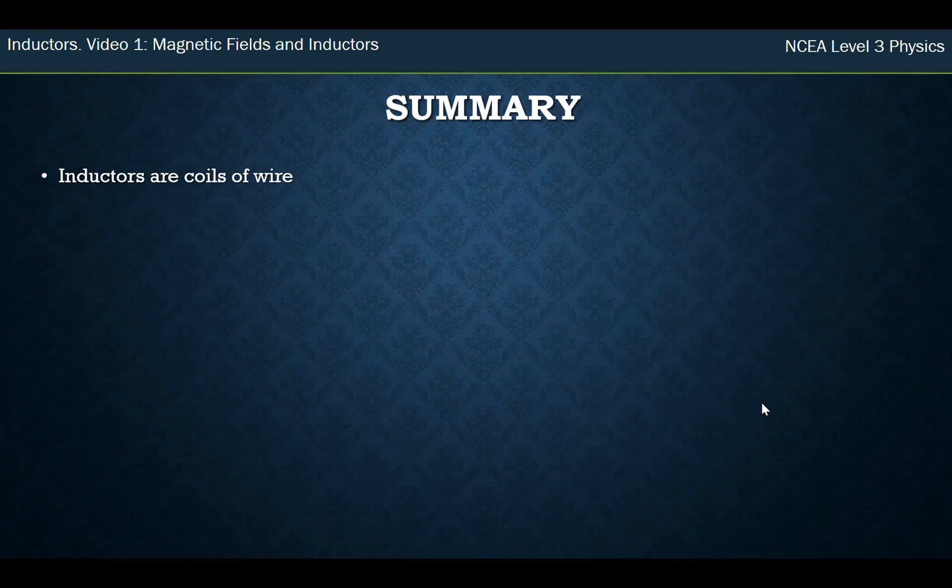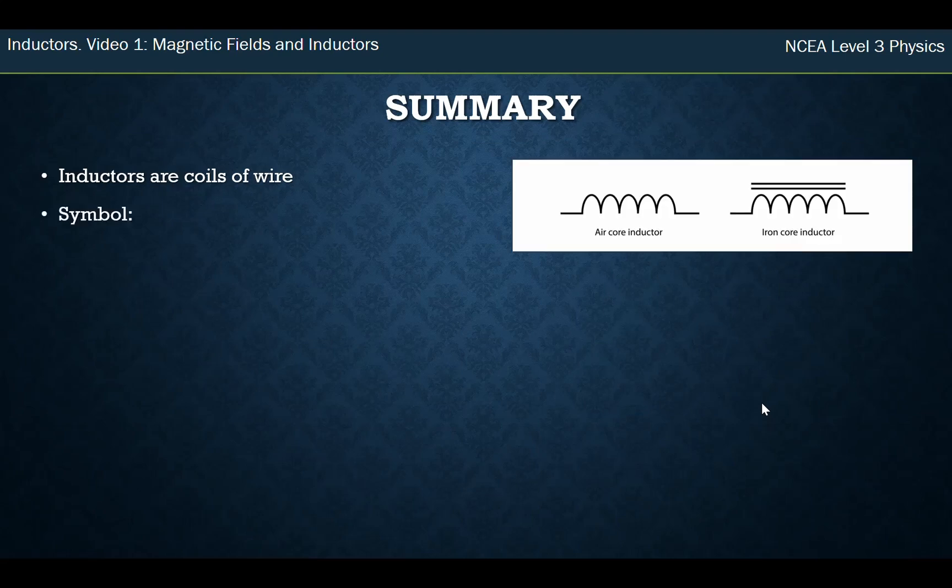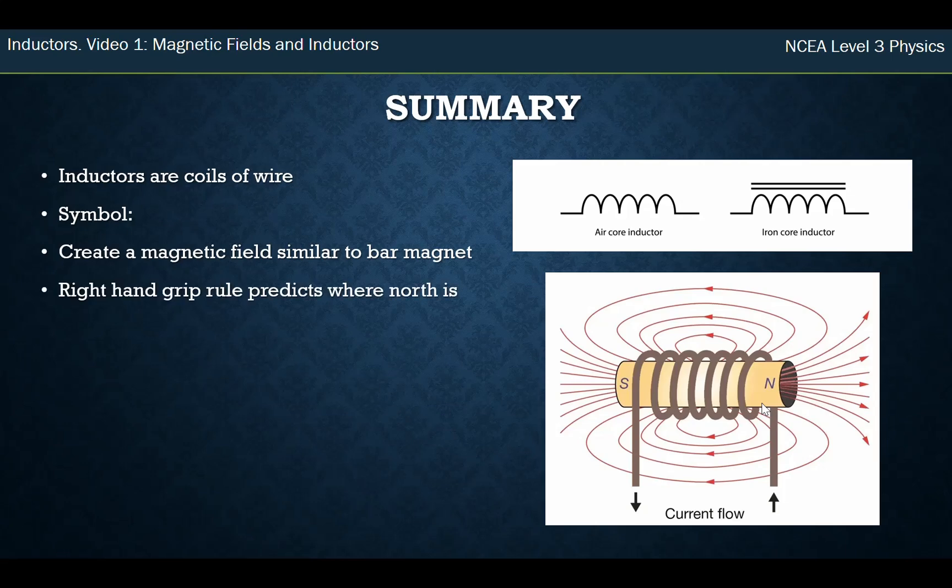So in summary, these inductors that we're looking at this year are coils of wire. They've got the symbol, which is sort of like a coiled symbol. We can have an iron core in that, and those are the two lines over the top of the symbol. They create a field around them, and that field looks like a bar magnets field. It has a north end and a south end.